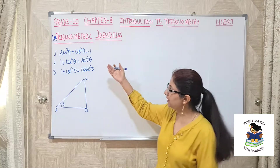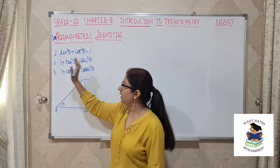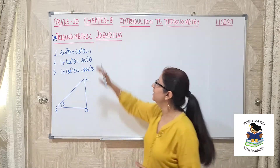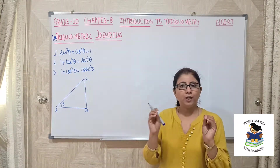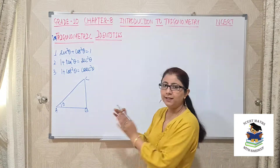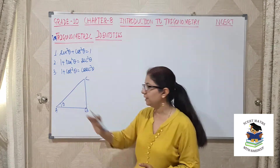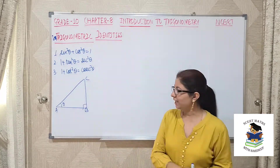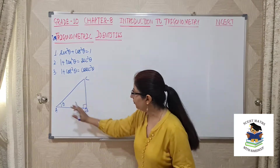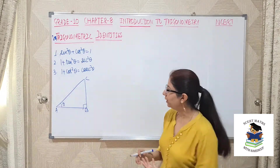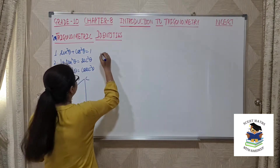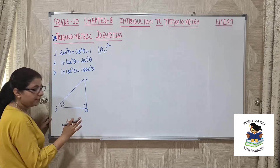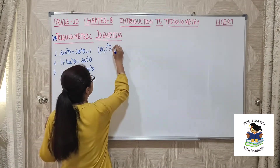Always remember: tan and cot should be associated with the '1' term, and the other term (secant or cosecant) will come on the right-hand side. Now let's see why these identities hold. Consider triangle ABC right-angled at B, with angle A = θ. Applying the Pythagorean theorem: AC² = AB² + BC².